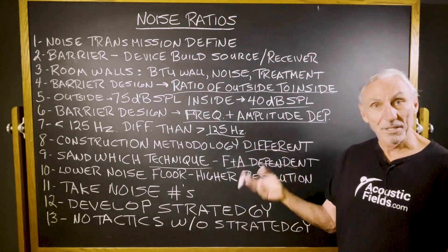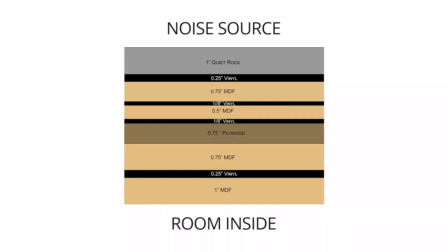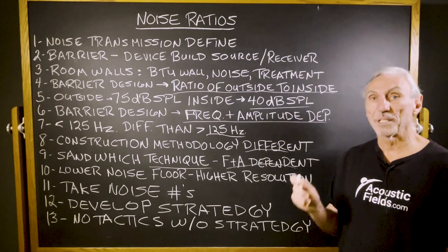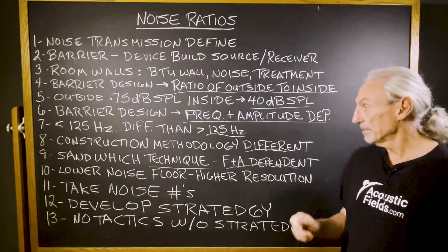You can see here in some of the examples: one particular sandwich uses mass-loaded vinyl and MDF; we use OSB sometimes. Other techniques are vastly thicker for lower frequency applications. Sometimes it's better to put the most dense material facing the noise, sometimes it's not. Remember, we're dealing with vibrational transmission — vibrational acoustics is a completely different science.